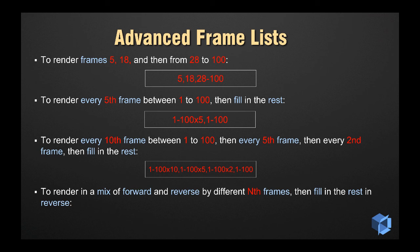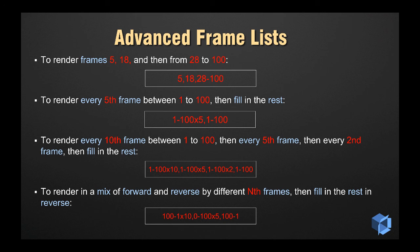As a really complicated example, you can render in a mix of forward and reverse by different step counts and then fill in the rest. Here's how that might look for a frame sequence of 1 to 100 frames, intermixing both forward and reverse modes in different step counts.